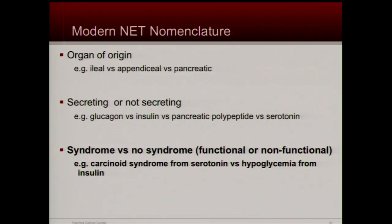We also classify these as functional and non-functional. Functional is not just making the hormone — it's having particular side effects from that hormone. You can have a very high serotonin level, or what we measure in the urine, 5-HIAA. If you have a very high level but don't have carcinoid syndrome, we don't call that a functioning tumor, because you have to have the symptoms to call it a functioning tumor.